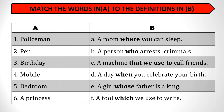Let's do another exercise for more practice. Match the words in A to the definitions in B. The words are: policeman, pan, birthday, mobile, bedroom, princess. The definitions are: a room where you can sleep; a person who arrests criminals; a machine that we use to call friends; a day when you celebrate your birth; a girl whose father is a king; a tool which we use to write.